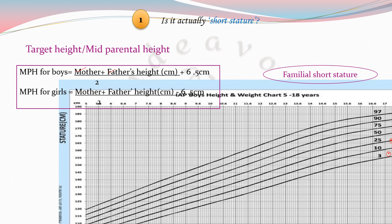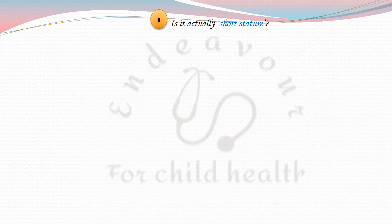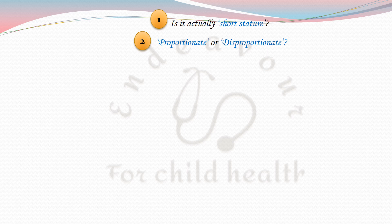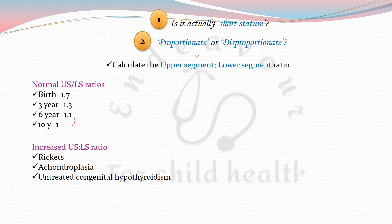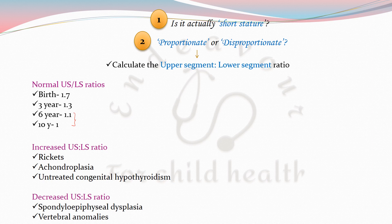The next thing you must determine is whether the child has a normal or altered upper segment to lower segment ratio — that is, whether the short stature is proportionate or disproportionate. The US:LS ratio at birth is 1.7, at 3 years it is 1.3, at 6 years it is 1.1, and at 10 years it becomes 1. An increased US:LS ratio is seen in rickets, achondroplasia, and untreated congenital hypothyroidism, whereas a decreased US:LS ratio is seen in spondyloepiphyseal dysplasia and vertebral anomalies. Disproportionate short stature is mostly due to anomalies in bone and cartilage.